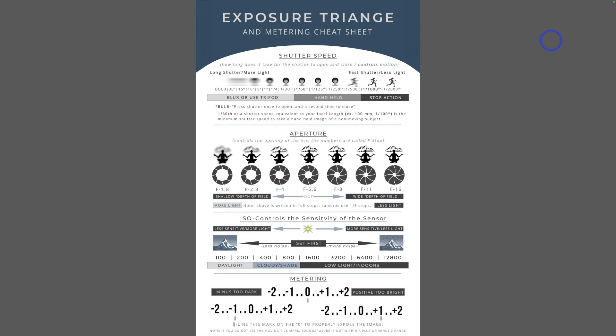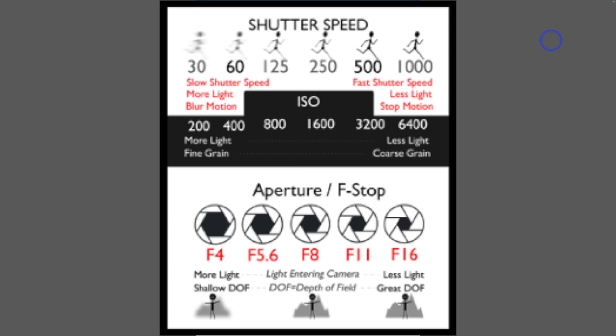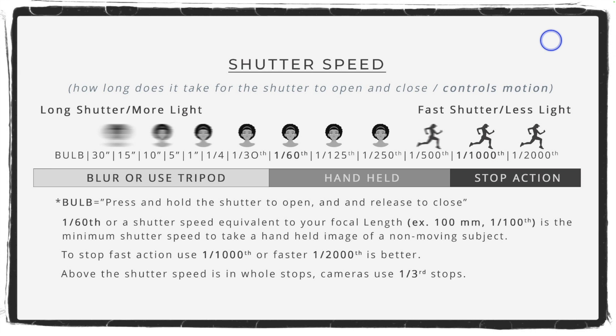This slide breaks everything down with graphic boxes to help you understand. It's sized at 11 by 17, but you can print it any size and it's available for free download on the website. I also have a credit card-sized cheat sheet showing what aperture, shutter speed, and ISO do, so as you're out taking photos you can just peek at it.